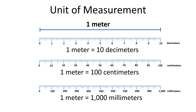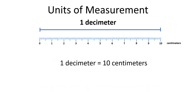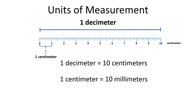If one meter is 10 decimeters, and one meter is also 100 centimeters, does it mean that one decimeter is equal to 10 centimeters? Yes, one decimeter is equal to 10 centimeters. And because there are 1,000 millimeters in a meter, that also means one centimeter is equal to 10 millimeters. Because if there are 10 centimeters in a decimeter, one decimeter is also equal to 100 millimeters.